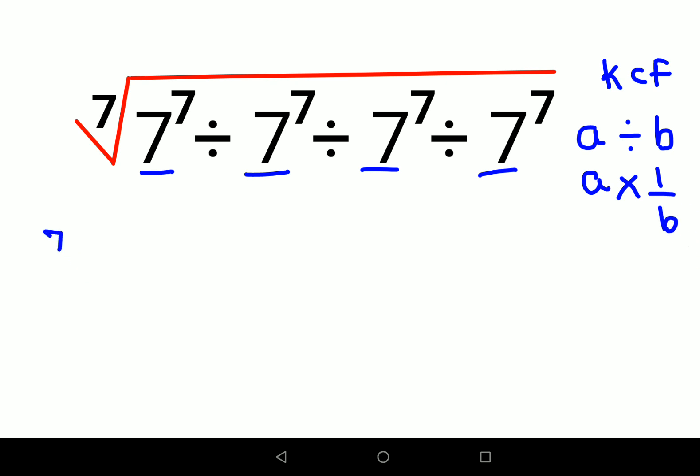So using the same logic, we will keep the 7th root as it is and we are left with 7 raised to 7 times 1 upon 7 raised to 7 times 1 upon 7 raised to 7 times 1 upon 7 raised to 7.